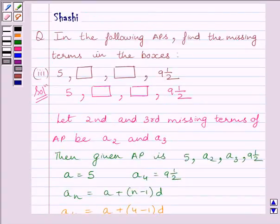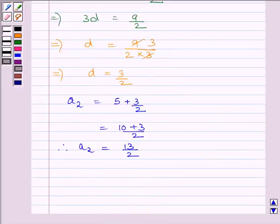We know that the common difference of an AP remains constant. We can obtain the second term by adding d to the first term: a₂ = 5 + 3/2 = 13/2 = 6½.